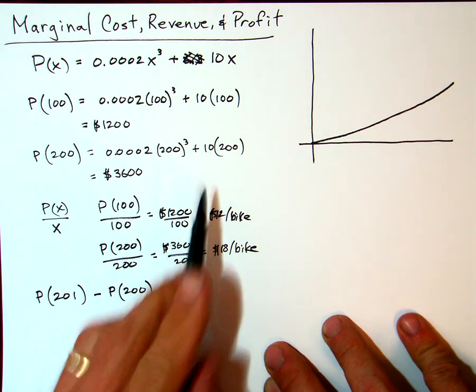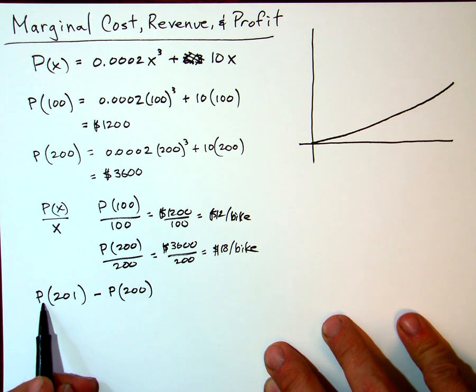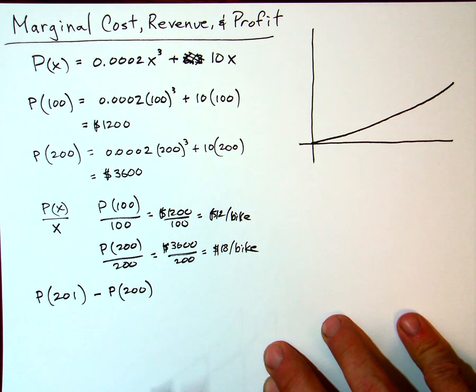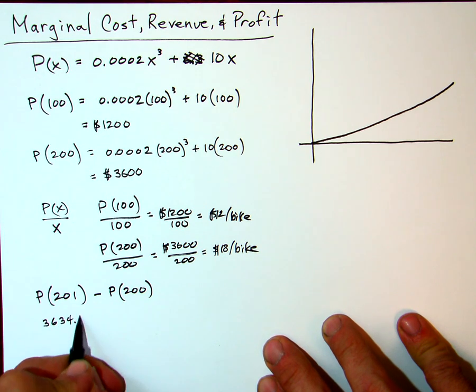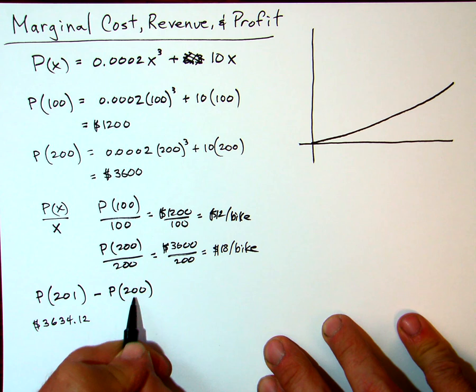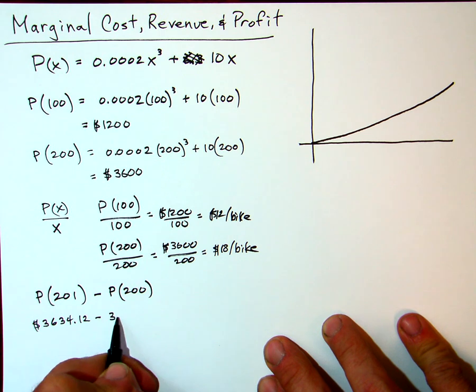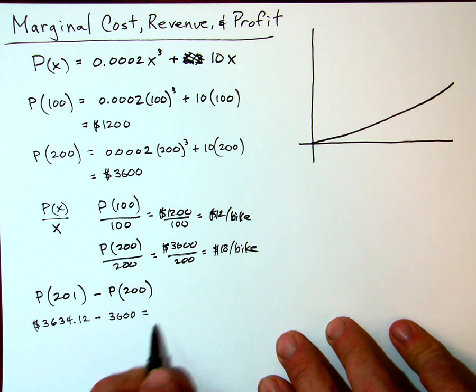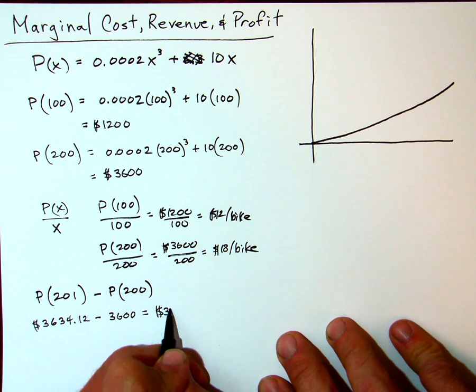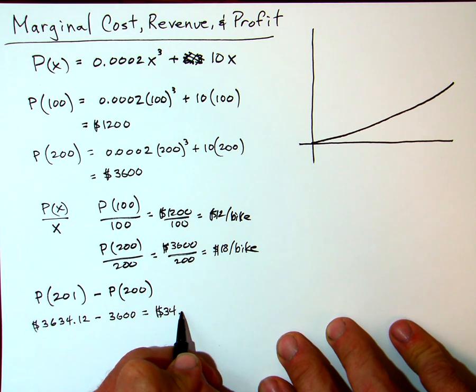Without going through all these computations, if we put in 201, we would get $3,634.12. We already know that's $3,600 from above, so the profit made on the 201st bicycle would be $34.12.